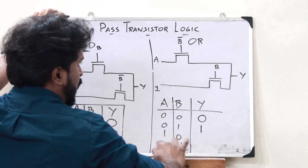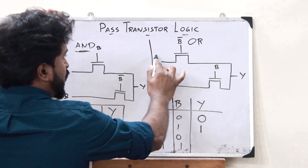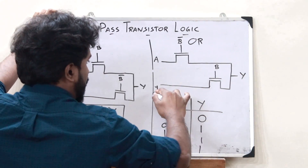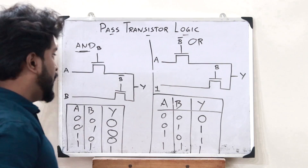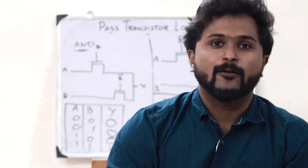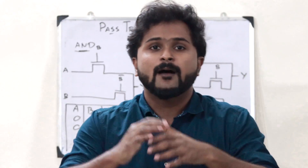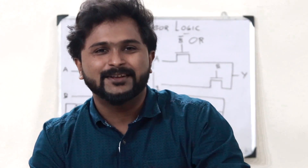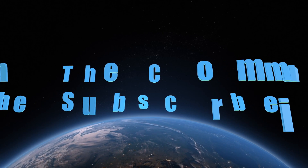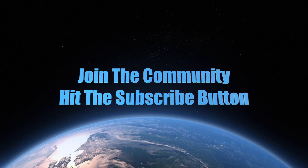For inputs 1 and 0: B is 0 so one transistor is off, but B bar is 1 so the other transistor is on, and A is 1, so we get output 1. Finally for 1 and 1: the transistor is on and we get output 1. We have obtained the OR operation A plus B. This is simply how we use pass transistor logic to implement AND and OR operations. I hope you now have a clear understanding of pass transistor logic. If you found this video informative, please hit the like button and subscribe.